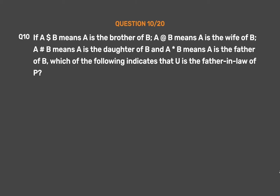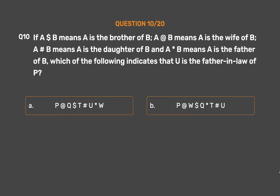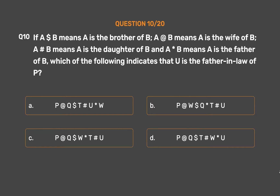Question number 10. If A $ B means A is the brother of B, A @ B means A is the wife of B, A # B means A is the daughter of B, and A * B means A is the father of B, which of the following indicates that U is the father-in-law of P? Option A: P @ Q $ T # U * W. Option B: P @ W $ Q * T # U. Option C: P @ Q $ W * T # U. Option D: P @ Q $ T # W * U.